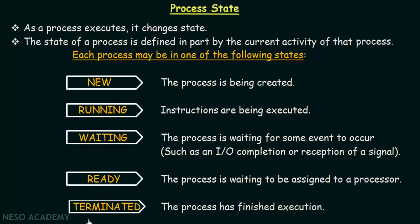The last state is called the terminated state. The process has finished execution — when the process finishes its execution we say that it is in the terminated state. These are the main states a process can be in, and different books or systems may use different words to denote these states, but they all mean the same thing. Now let us look at a diagram of the process states and see how a process begins from the new state and reaches the terminated state.